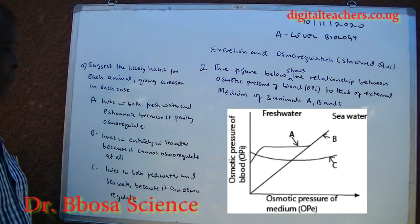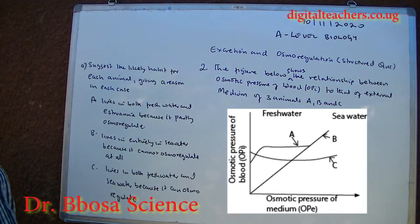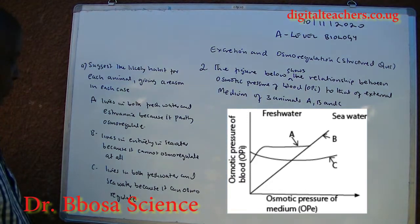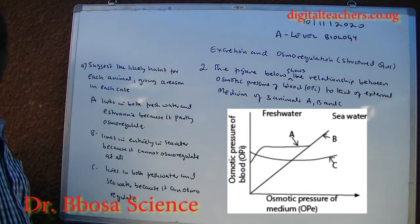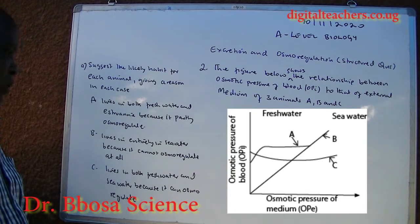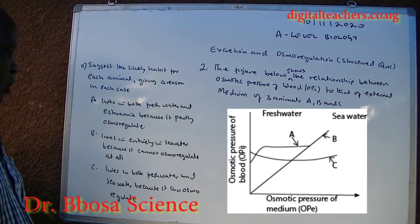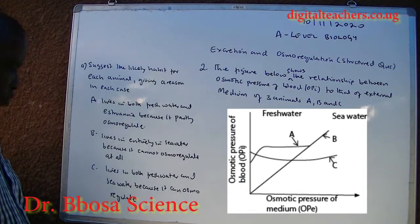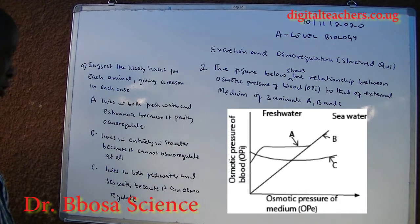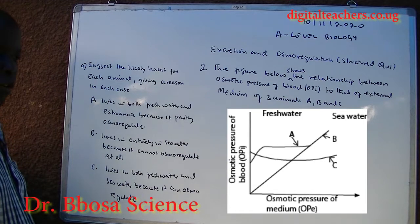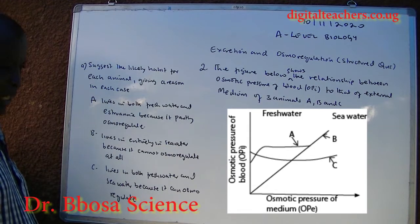A lives in both fresh water and estuarine, because it partly osmoregulates. B lives entirely in seawater, because it cannot osmoregulate at all. C lives in both fresh water and seawater, because it can fully osmoregulate.